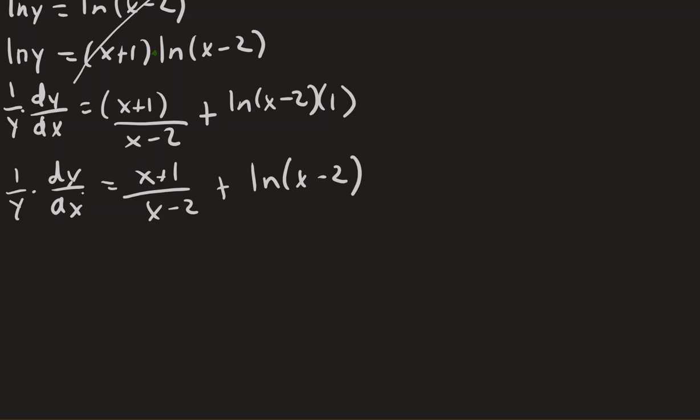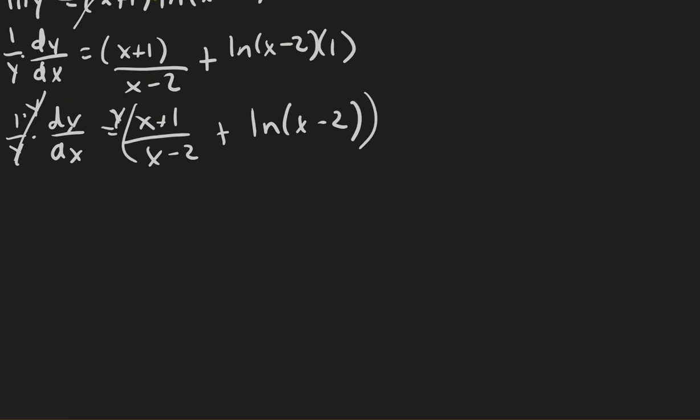All right. Well, I've almost got what I want. I almost have dy dx, but I don't care to know what it is times 1 over y. So to get this to go away over here, algebraically, I want to multiply that by y, which means I need to multiply this whole side by y, either both terms or put in the parentheses like I did.